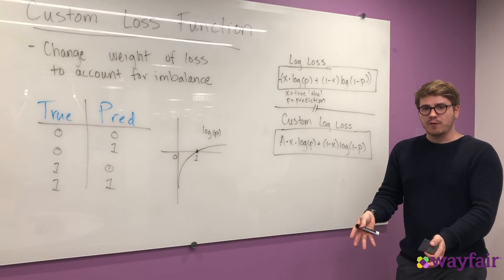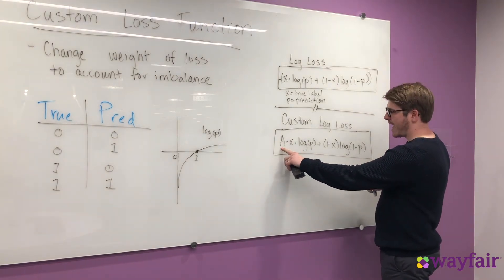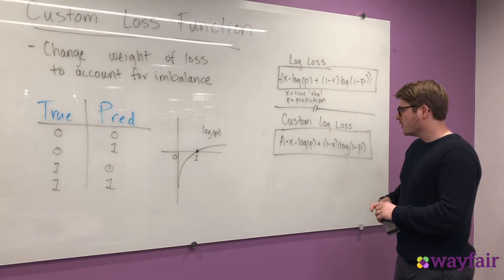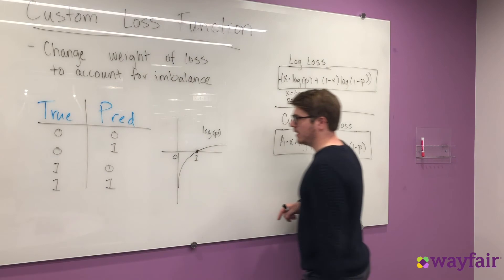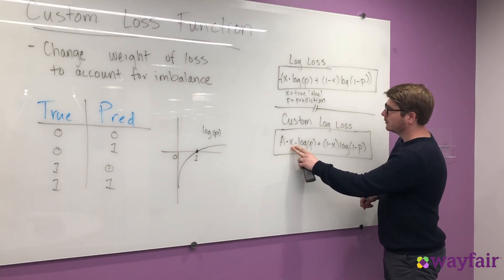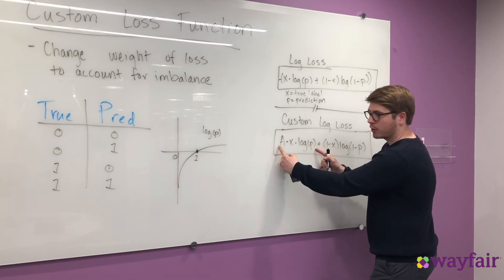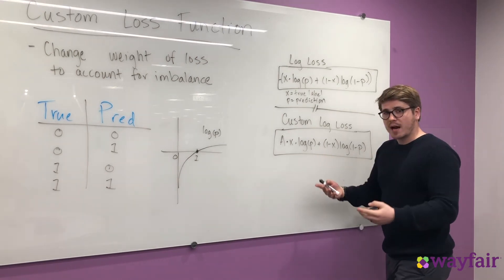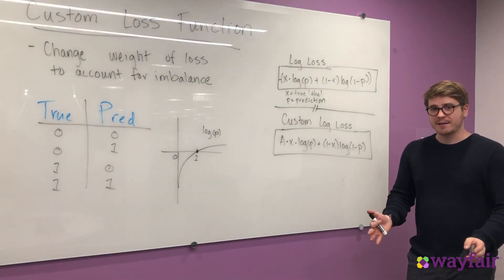Now, how would we customize this if we have an imbalanced data set? It turns out this is actually very easy. The custom log loss function is the exact same function with an a added to the first term, where a is just the ratio of how we want to balance these two outcomes. So say we care far more about accurately predicting when an order is indeed fraudulent, when p equals 1. So what we would do is make this a some value greater than 1, which means that if x equals 1, we have a truly fraudulent prediction, the loss term for an inaccurate prediction of our model is going to be much larger than when we have a non-fraudulent order and we inaccurately predict that. And what that does is compensate for the fact that we have far fewer fraudulent orders than non-fraudulent orders. And that is introducing a custom loss function.